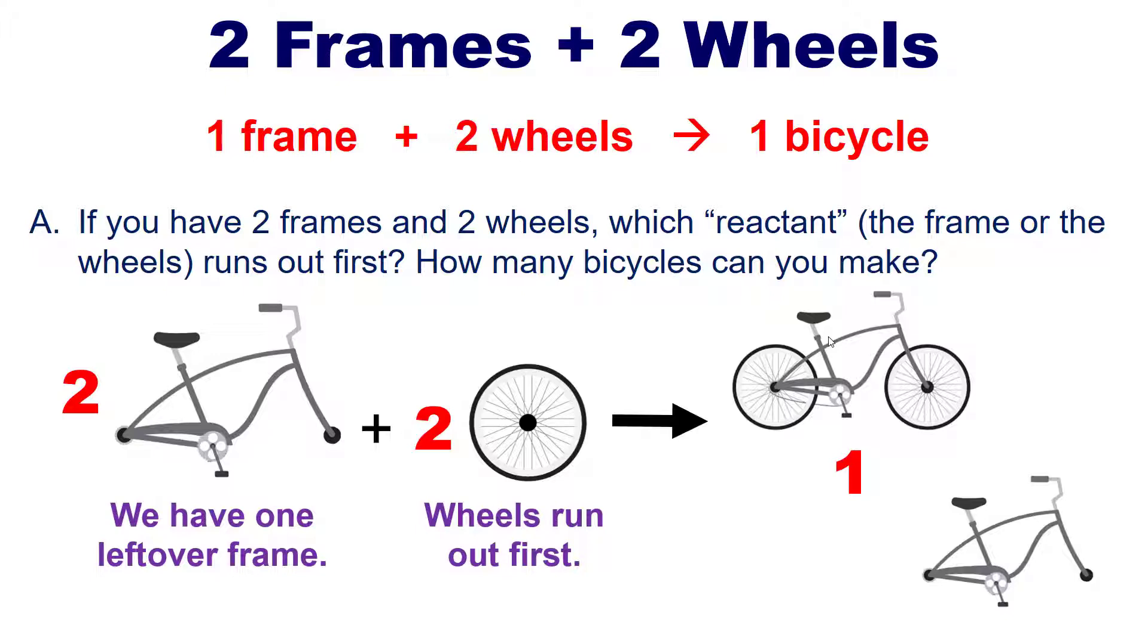We would say in this scenario that the wheels are the limiting reactant, the reactant that runs out first, and the frames in this scenario are added in excess. It stands to reason too that you would run out of wheels first because it requires twice as many wheels to make a bicycle as it does frames.